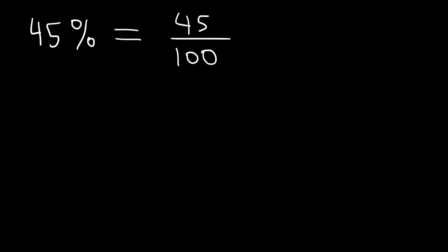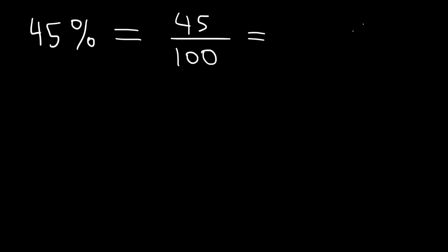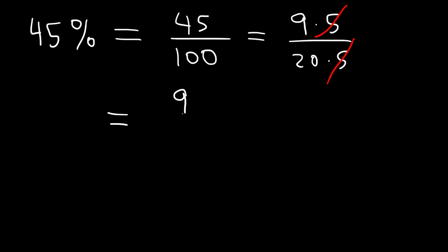All we need to do at this point is reduce the fraction. Whenever you see a number that ends in 5 or 0, that means it's divisible by 5. It turns out that 45 is 9 times 5, and 100 is 20 times 5. You could find the numbers 9 and 20 by dividing 45 by 5 and 100 by 5. We can cancel a 5, and that's as far as we can go. So 45% is equivalent to 9 over 20 as a reduced fraction, and that's the answer.